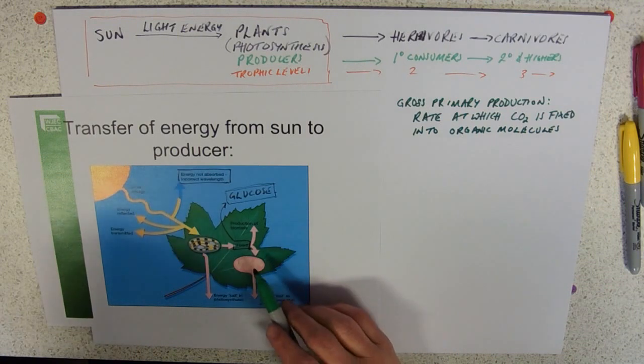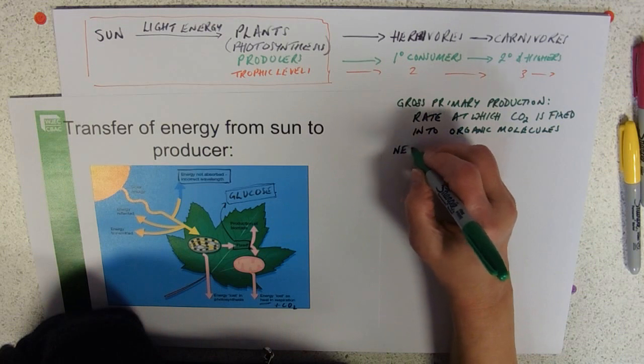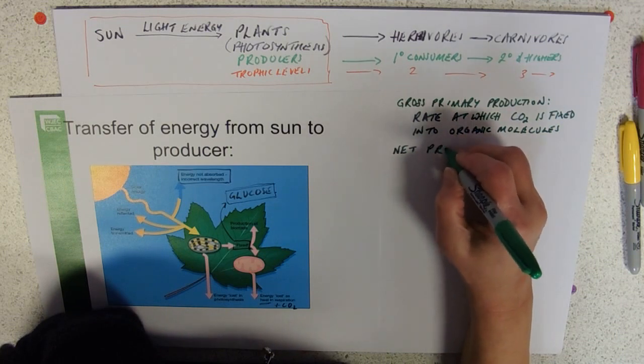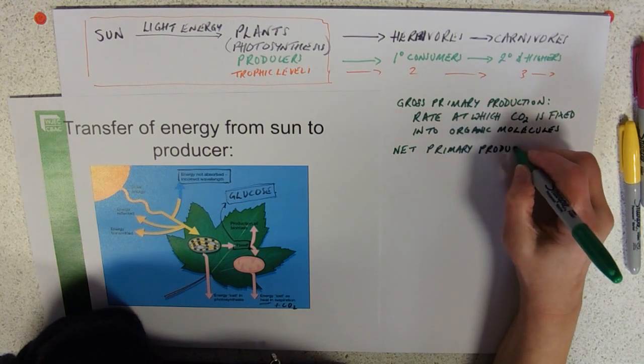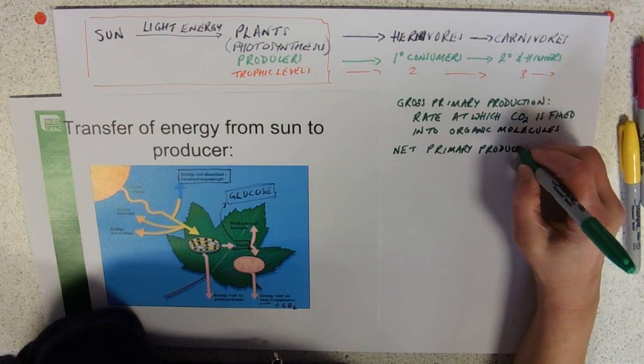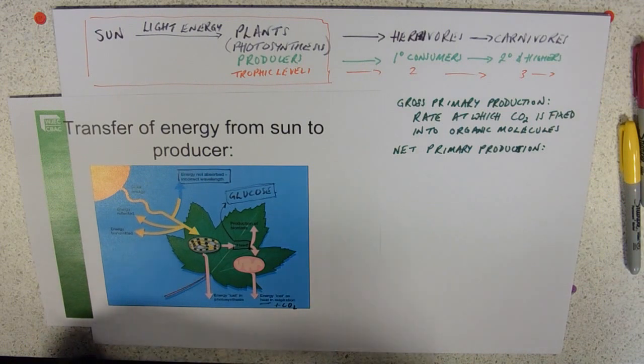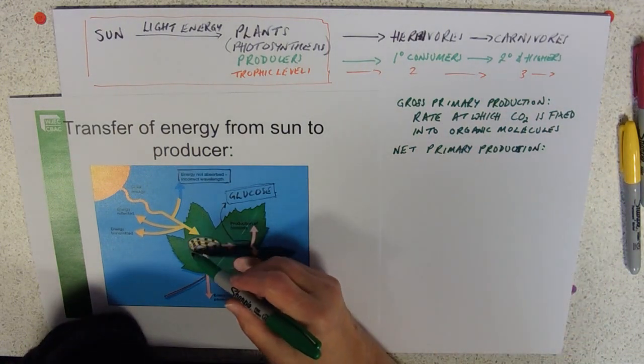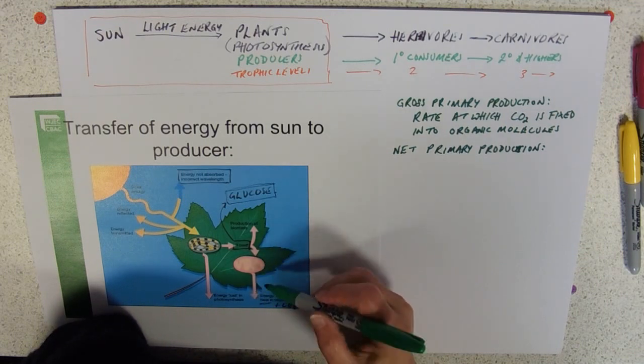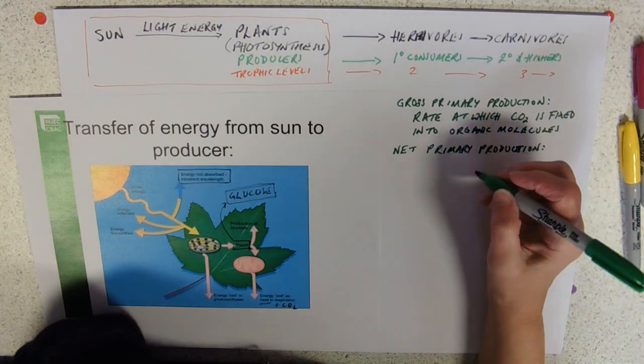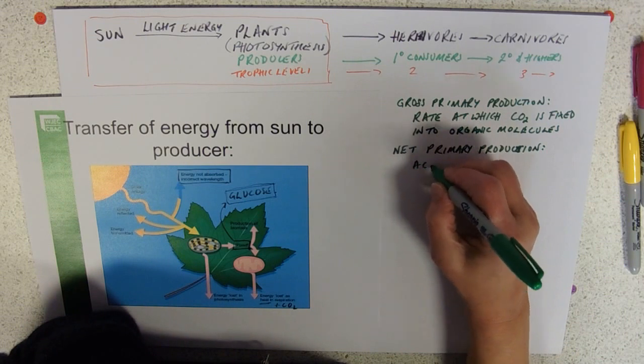Bear in mind that some of that is then going to be respired, which leaves us with net primary production. This works like your tax. You get a gross wage and then give the government some. What you're left with is your net wage. This is the same—gross is what they've earned through photosynthesis, this is what they've given out in respiration, and what they're left with is net primary production. This really represents the accumulation of biomass.